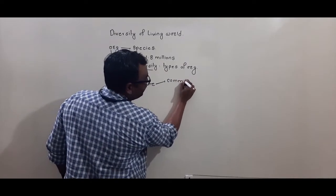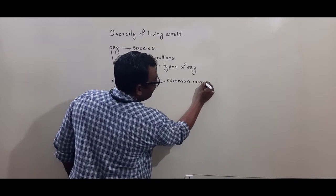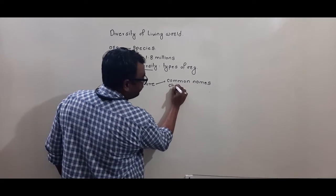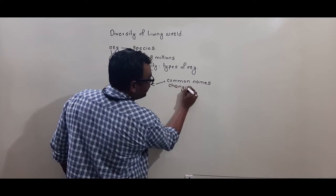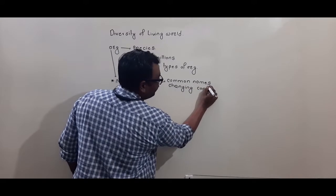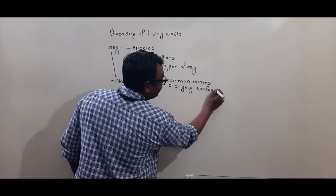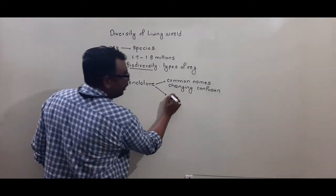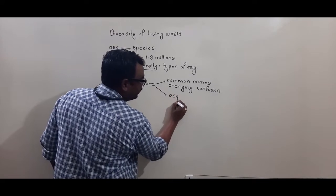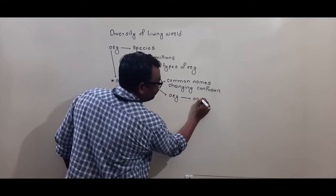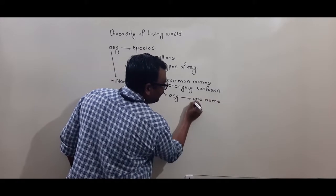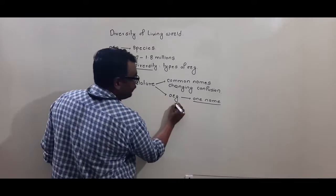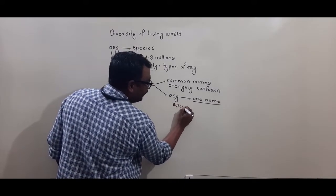Previously we used common names, also called vernacular names. These common names keep changing from place to place, which creates lots of confusion in organism names. That is why there was a need to standardize nomenclature so that each organism would be recognized by only one name throughout the universe.